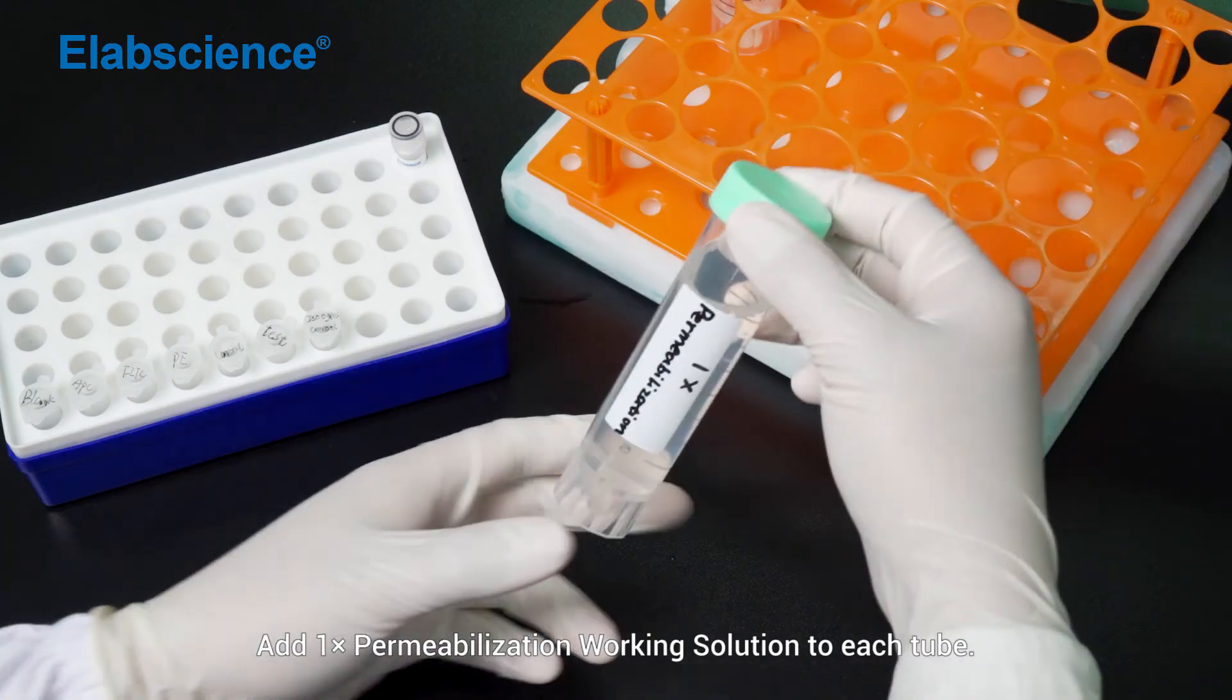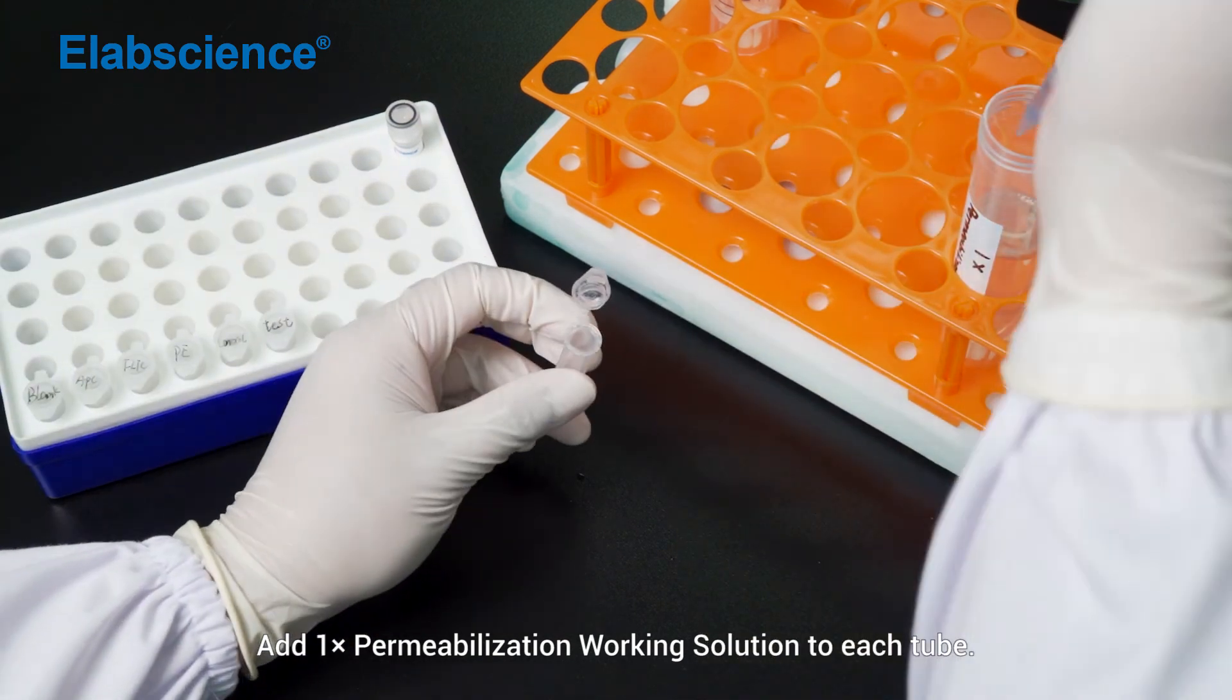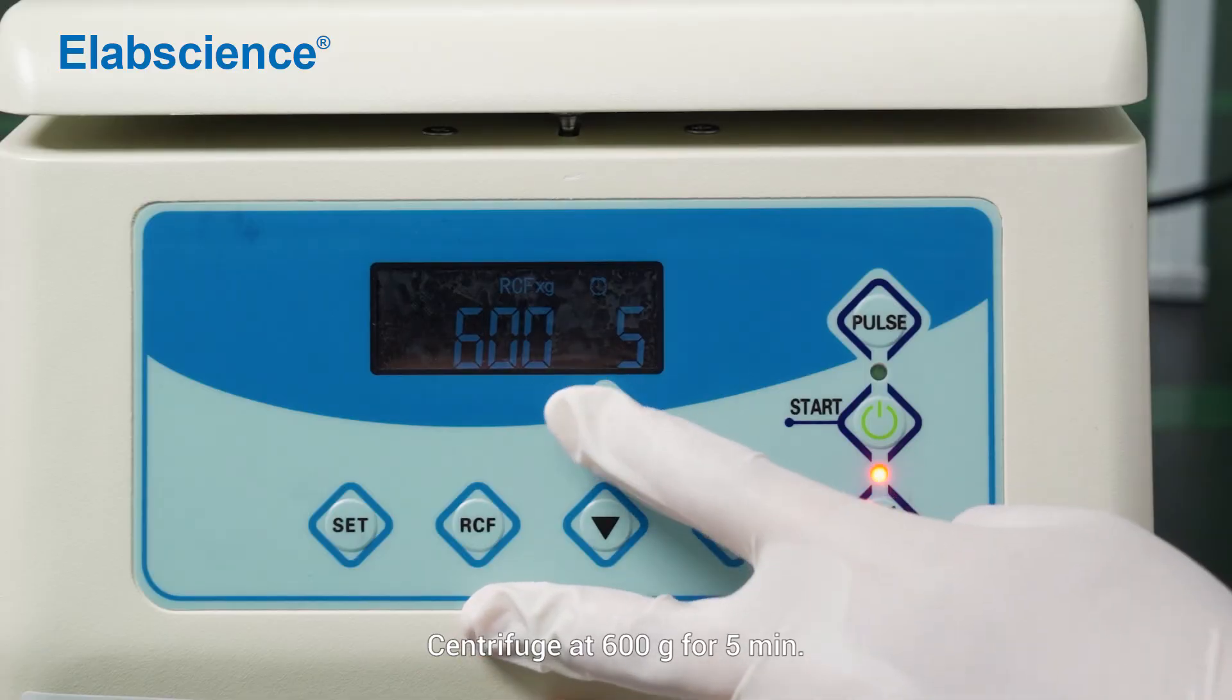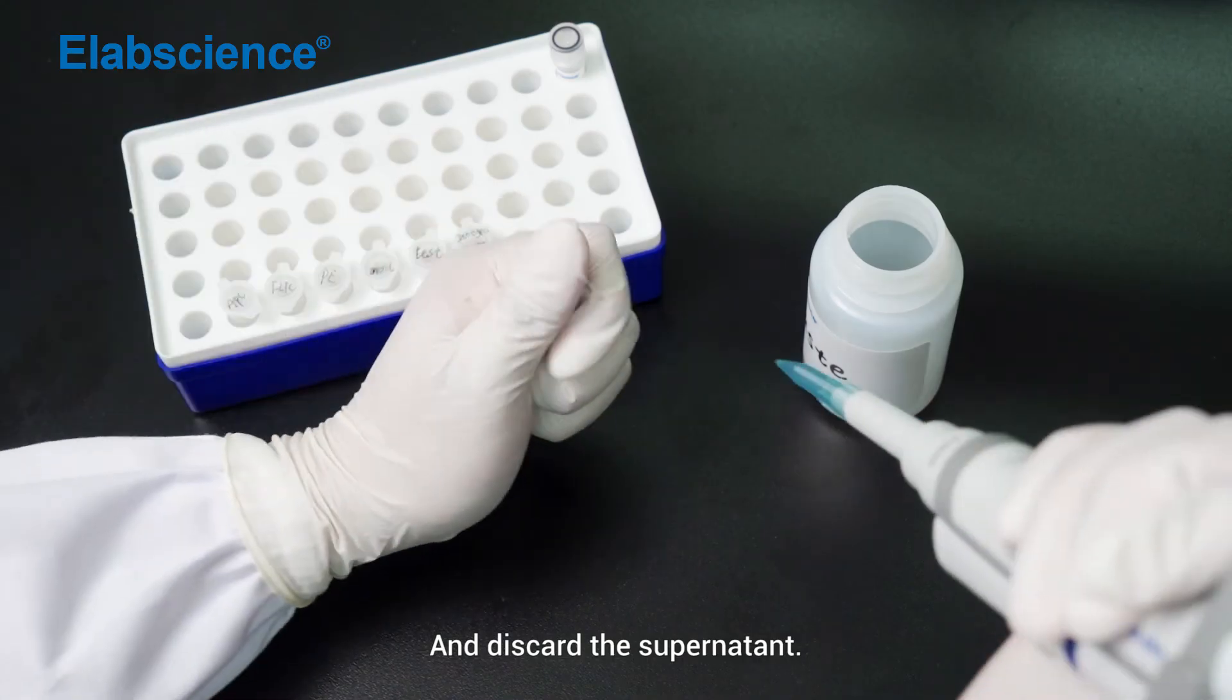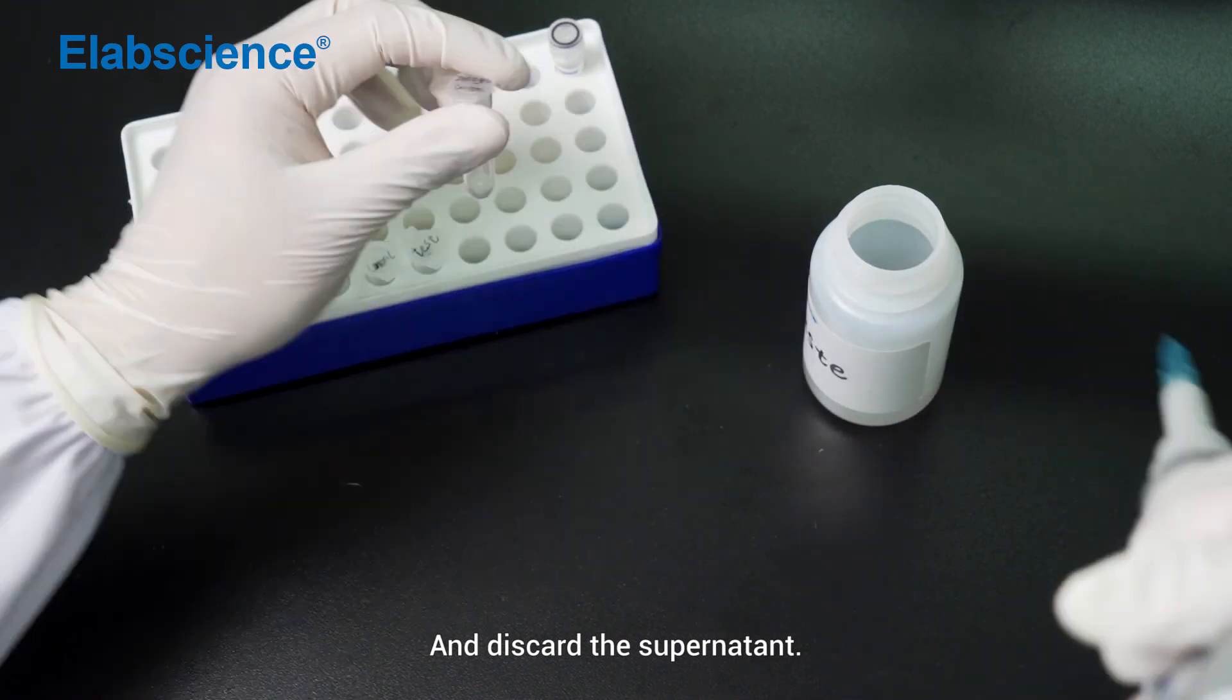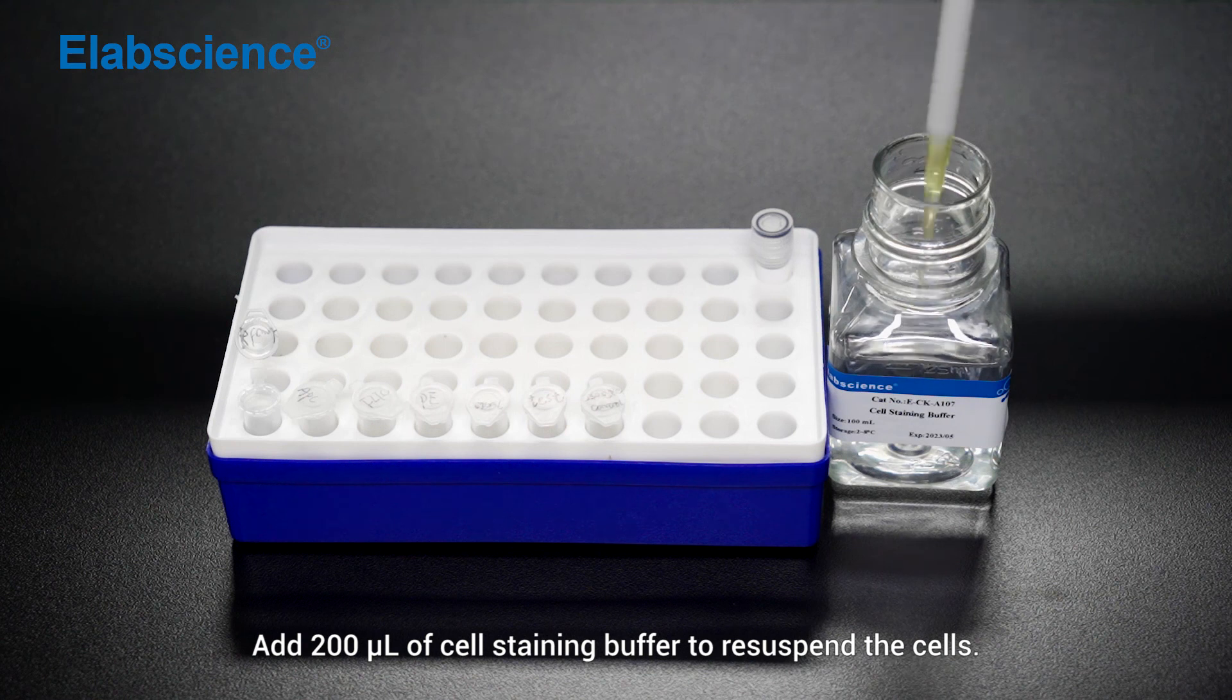Add 1 time permeabilization working solution to each tube. Centrifuge at 600 times gravity for 5 minutes. Add 200 µL of cell staining buffer to suspend the cells.